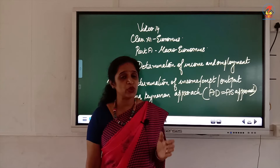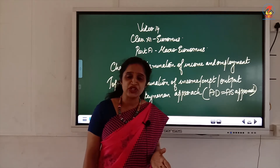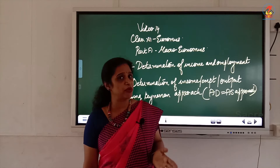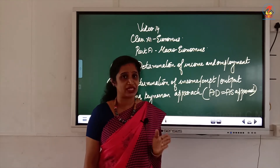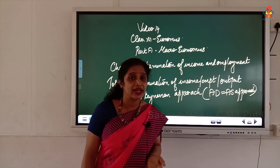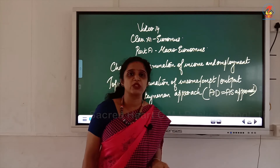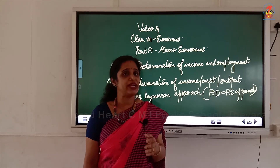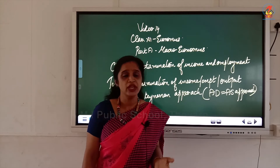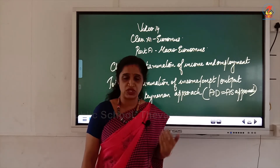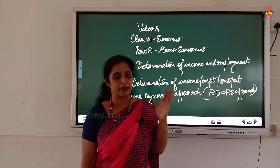Keynes used two approaches to explain the determination of equilibrium level of income and employment. The first is the AD-AS approach — aggregate demand and aggregate supply — and the second is the saving-investment approach. This is one of the most important topics in the chapter.